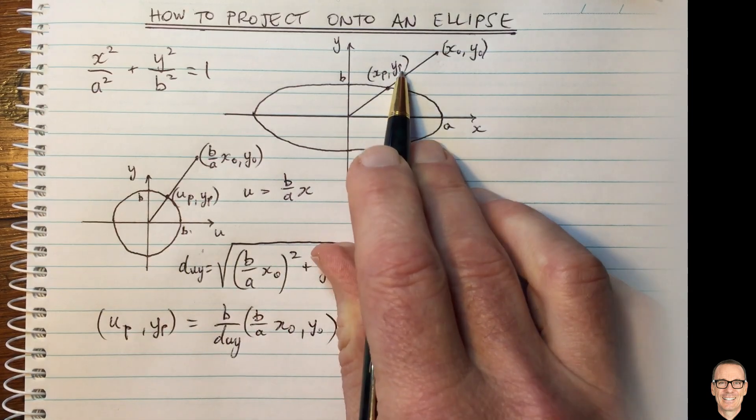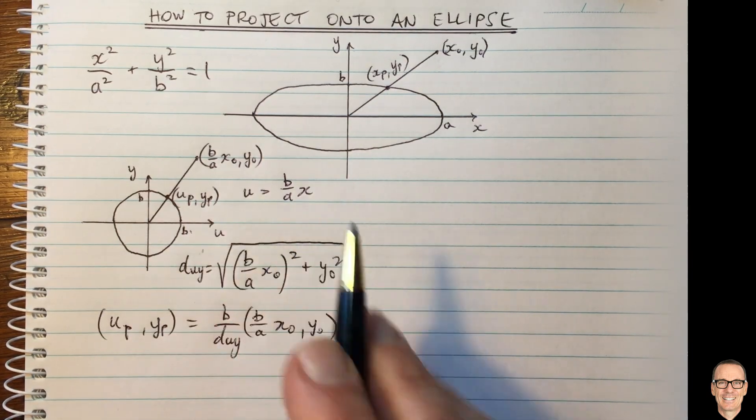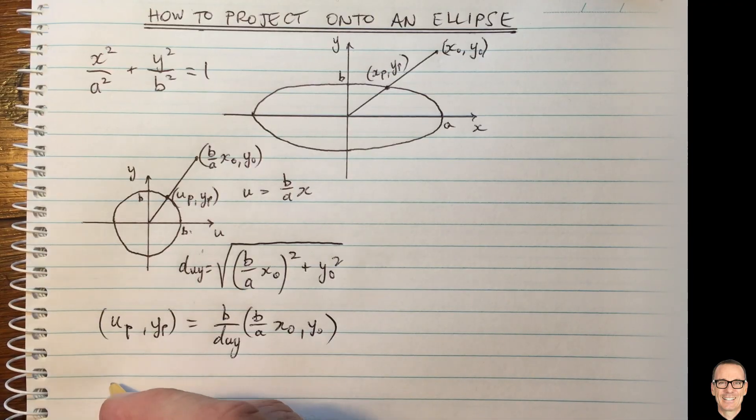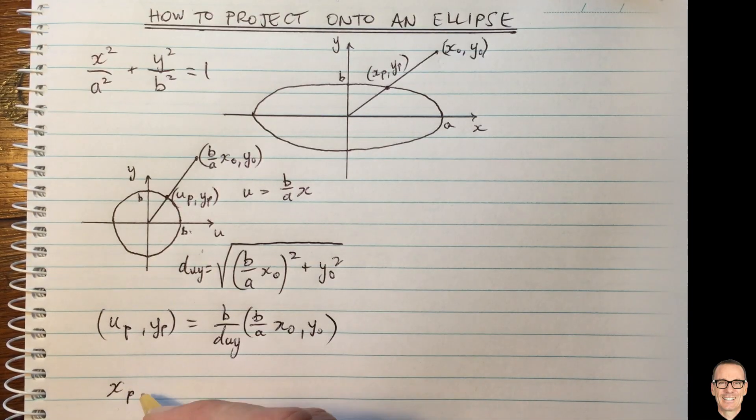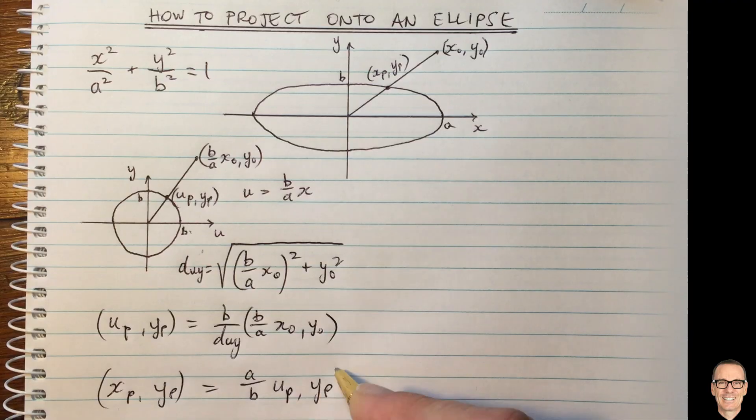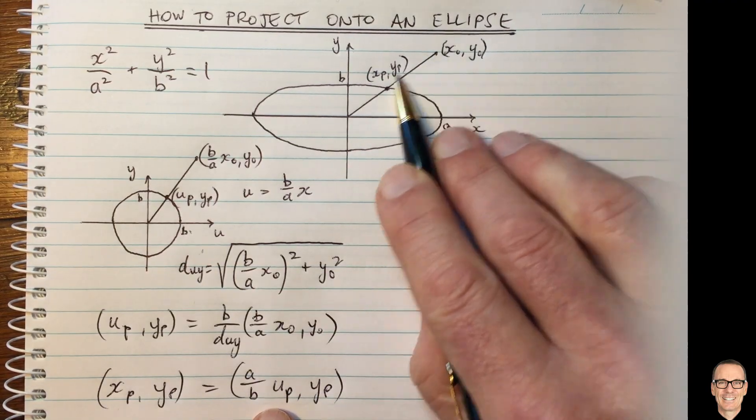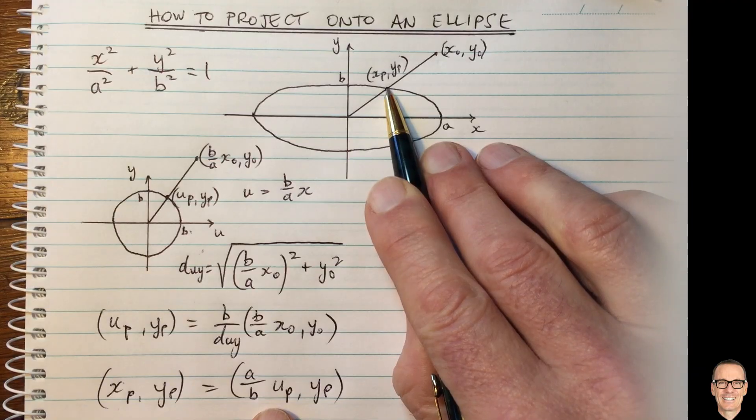And to go back to the point xp yp we just invert this relationship here. So we find xp yp equals a on b times up comma yp. Okay, so we've projected from our point directly towards the origin onto the ellipse.